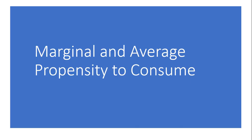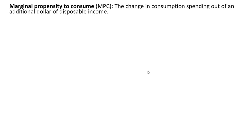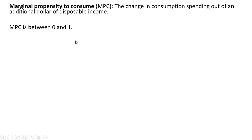In this video, I'm going to look at marginal and average propensity to consume. The marginal propensity to consume gives the change in consumption spending out of an additional dollar of disposable income. It will range between 0 and 1.